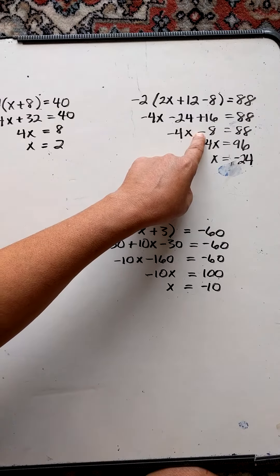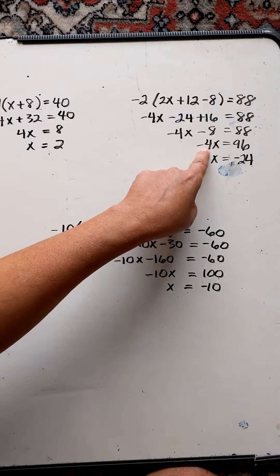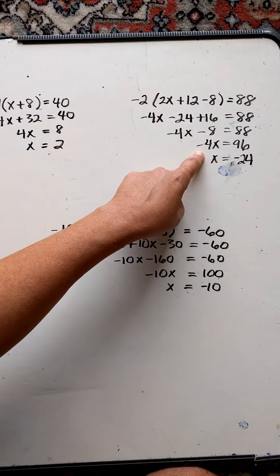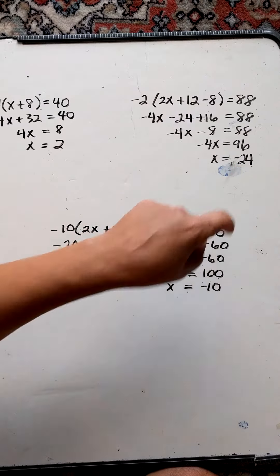I add 8 to both sides to get rid of this. So I bring down negative 4x equals 96, which is 88 plus 8. Divide both sides by negative 4. x equals negative 24.